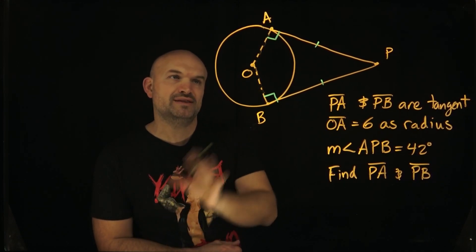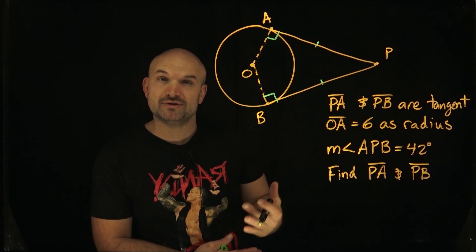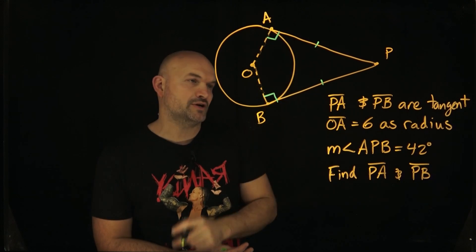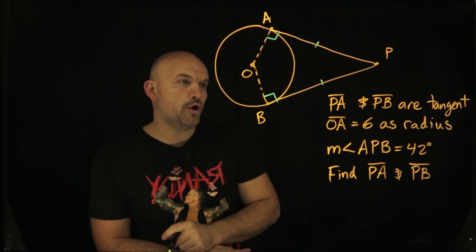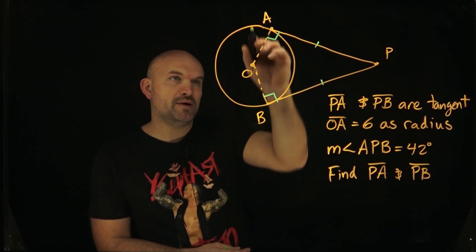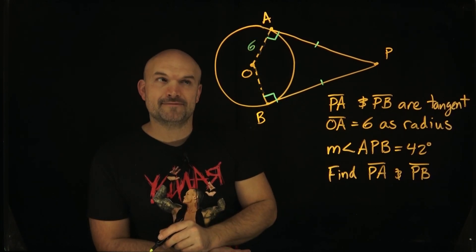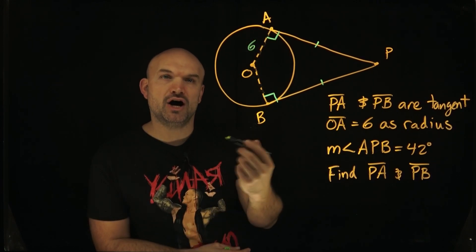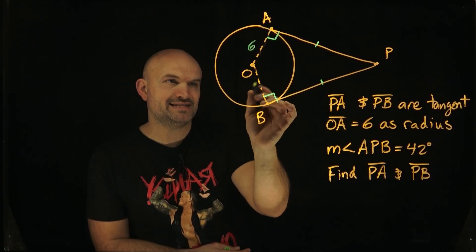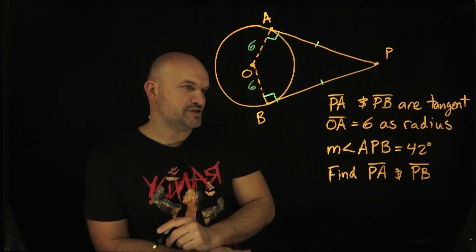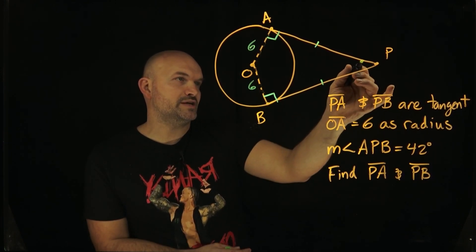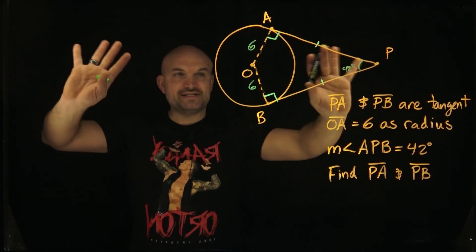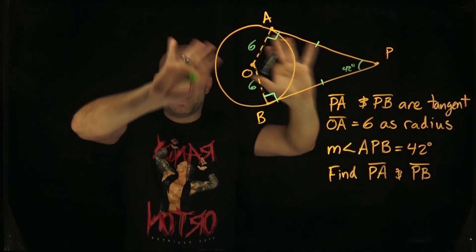That's a mistake students will make — they just forget the rules. So make sure you refresh yourself on the rules of tangent lines, also secant lines, and whatever else you are going through. The next one says line OA is equal to 6. So OA equals 6 and it is the radius. If OA is the radius, then OB also has the same radius, so that is going to be 6 as well. And then it says the measure of angle APB is going to be 42 degrees. So now I've taken all the provided information and drawn it on my diagram.